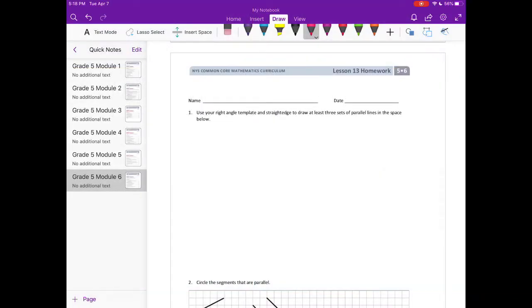Grade 5, Module 6, Lesson 13 Homework. Number 1, use your right angle template and straight edge to draw at least three sets of parallel lines in the space below.